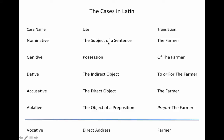The nominative case is used for the subject of a sentence, when the farmer is the doer of the action. The genitive case is used for possession — when the farmer owns something, so 'the house of the farmer,' or in English 'the farmer's house.' The dative is used for the indirect object, so if I give something to the farmer, or do something for the farmer.